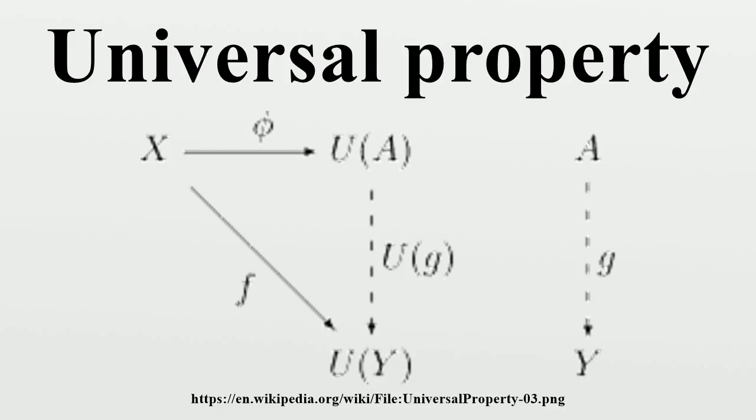A terminal morphism from U to X is a terminal object in the comma category of morphisms from U to X. In other words, it consists of a pair (A, φ) where A is an object of D and φ: U(A)→X is a morphism in C, such that the following terminal property is satisfied. Whenever Y is an object of D and f: U(Y)→X is a morphism in C, then there exists a unique morphism g: Y→A such that the following diagram commutes.